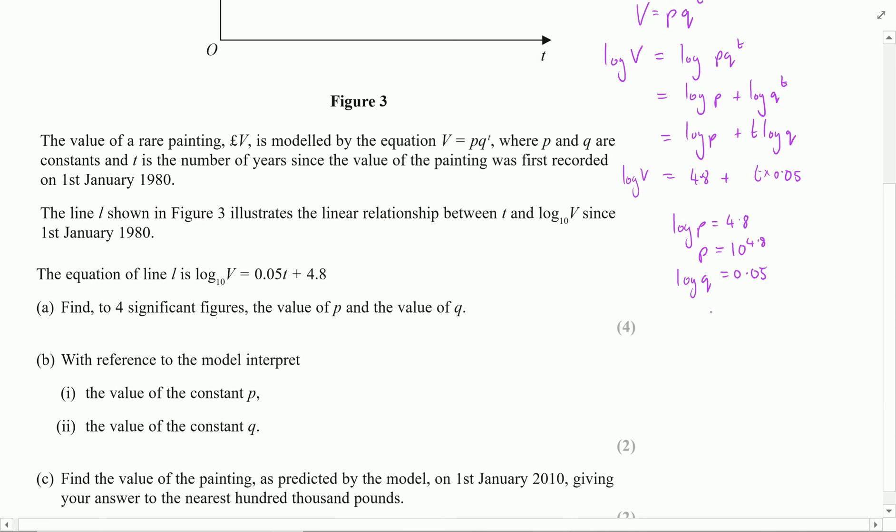Now it wants these given as four significant figures, so I throw those values into my calculator. At four significant figures, I've got 63,100 for the first and 1.122 for the second. So there are my values for p and q.